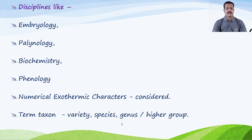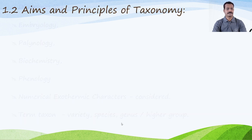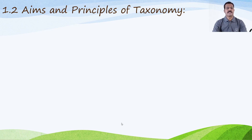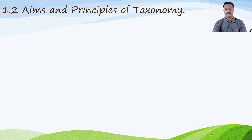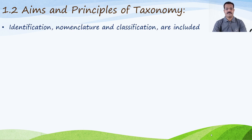The term 'taxon' indicates a taxonomic group like variety, species, genus, or any higher group. The aims and principles of taxonomy include identification, nomenclature, and classification. There are two main approaches of this science.